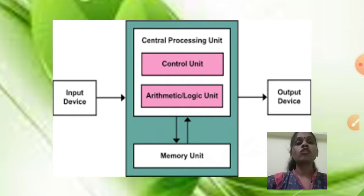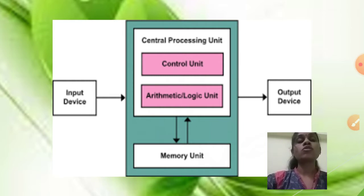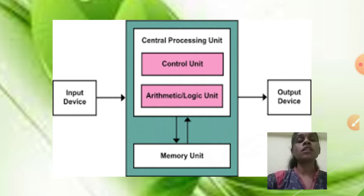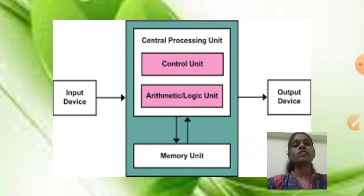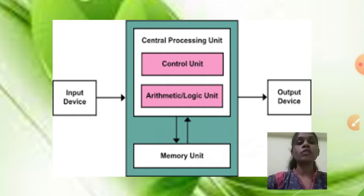What is the Control Unit? The Control Unit means the CPU is controlling the whole computer system. Whatever things are going inside the computer and coming outside the computer are fully controlled by the Central Processing Unit. Everything you are doing is controlled by the CPU.